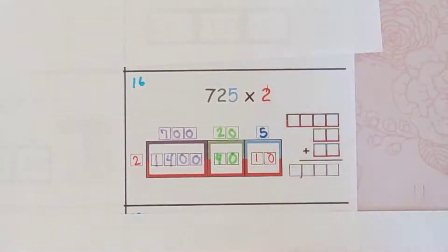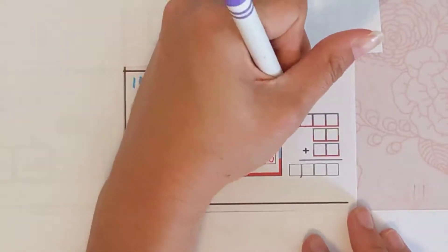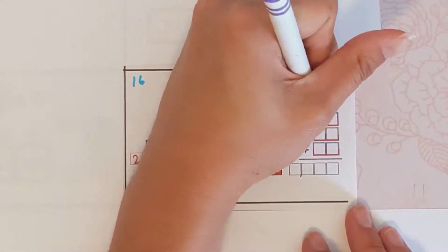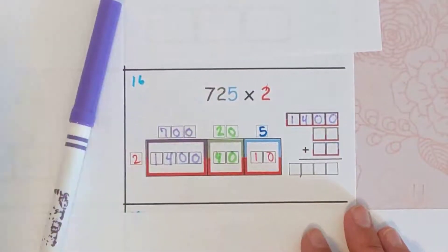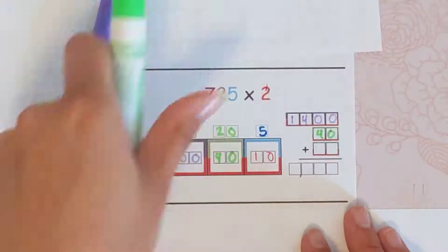Then you'll come over here, and you can use these or another piece of paper if you want, but the boxes here will help you make sure you have the right amount of digits.